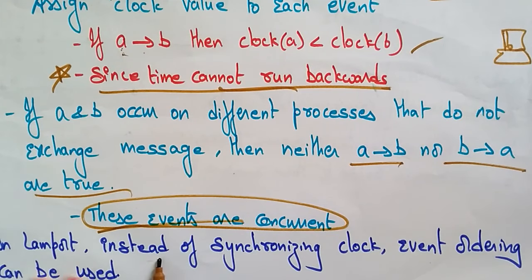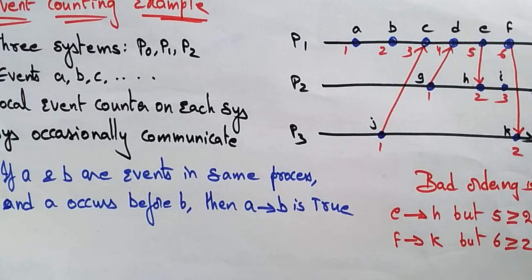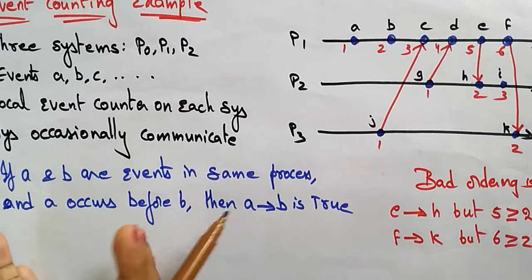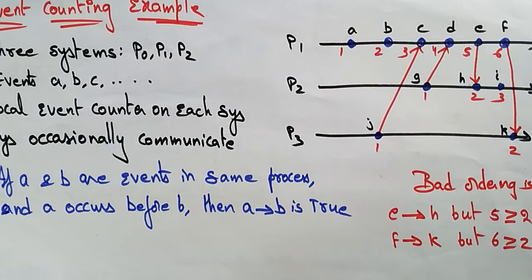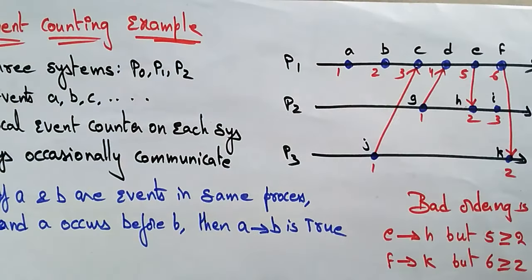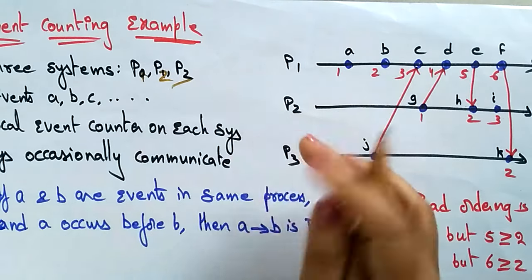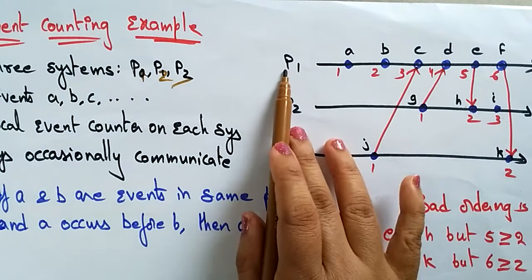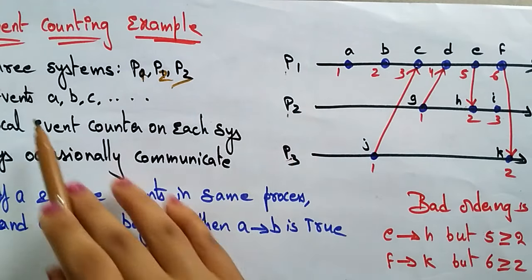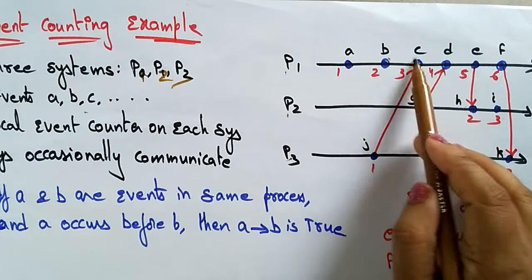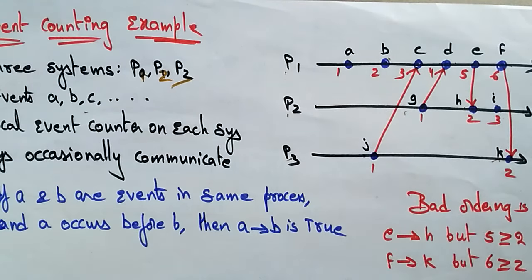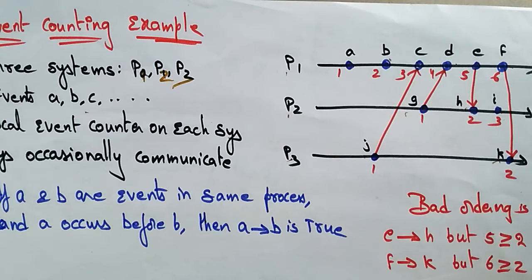In Lamport, instead of synchronizing clocks, event ordering can be used. Let me explain a simple example — event counting. If you know this example you can easily implement the Lamport algorithm. So let us take three systems P1, P2, P3. The events participating in each process are A, B, C, D, E, F in P1; G, H, I in P2; and J, K in P3. These are all the events participating in the systems.